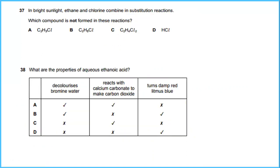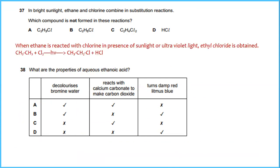Question 37. In bright sunlight, ethane and chlorine combine in a substitution reaction. Which compound is not formed in this reaction? When ethane is reacted with chlorine in the presence of sunlight or ultraviolet light, ethyl chloride is obtained. This is the chemical reaction. Which compound is not formed in this reaction? The answer will be A.